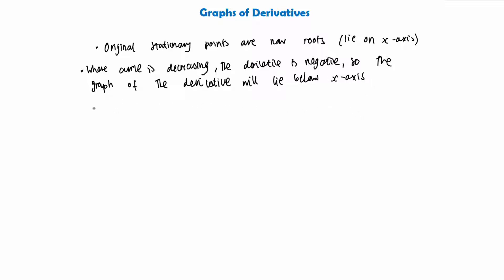The final thing we want to look at is quite similar: wherever the curve is increasing, the derivative is positive. So the graph of the derivative will lie above the x-axis.